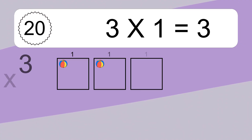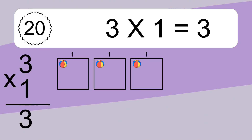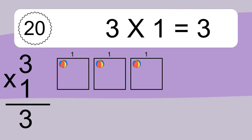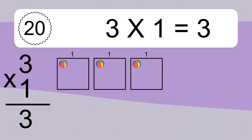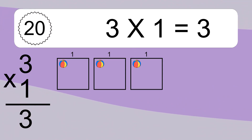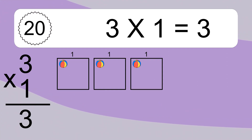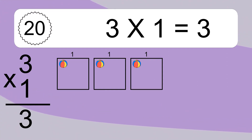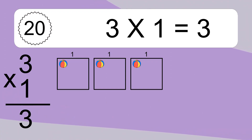3 times 1 equals what? 3 times 1 equals 3. We have 3 boxes, and each box has 1 colorful ball inside. If you count all the balls in all the boxes together, you will have 3 times 1 balls. This equals 3 balls.